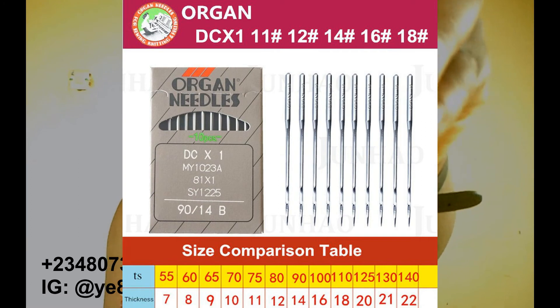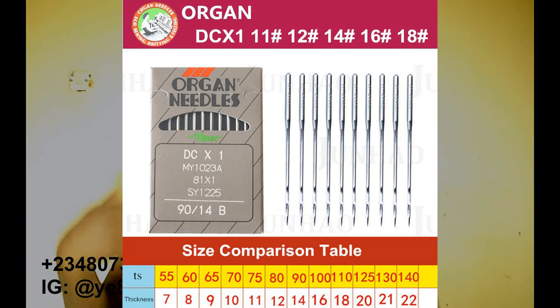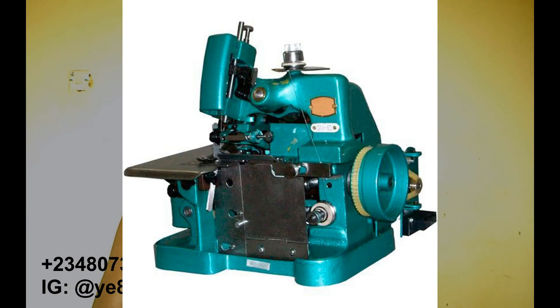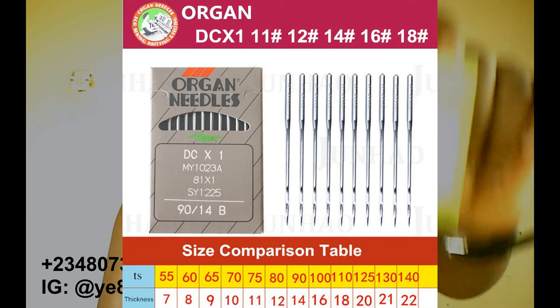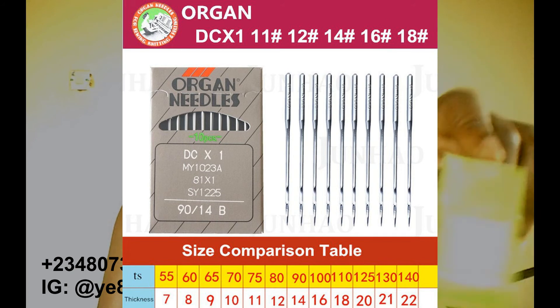The last one is DC times 1. DC times 1 is for the interlock machine — the ones we use for the inside of the clothes: inner weaving, interlock, overlock, weaving machine. Some people call it overlock, interlock, or weaving machine — it weaves the inside of the dress. You use DC times 1, but size 14, please. If you use size 16 or size 18, it's not going to work. DC times 1, size 14, for your interlock/overlock/weaving machine.